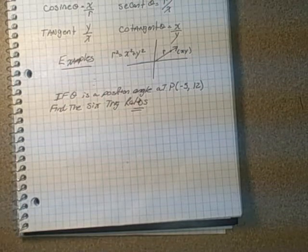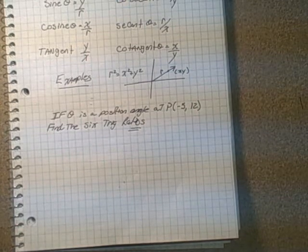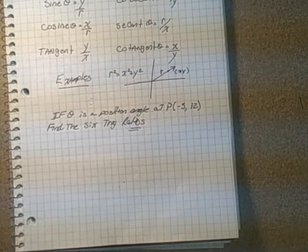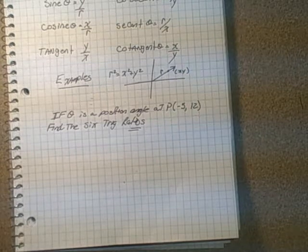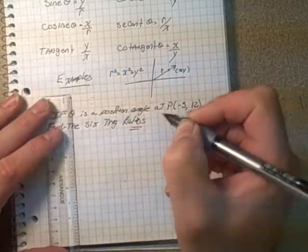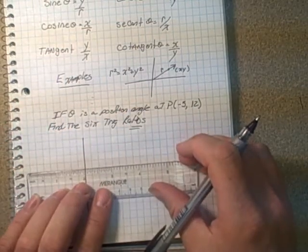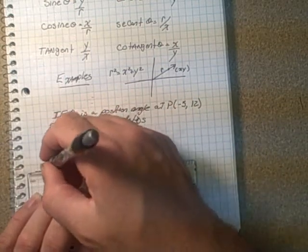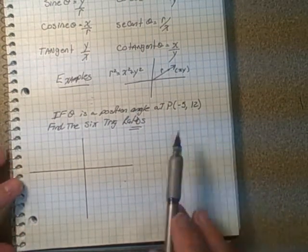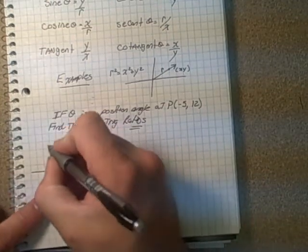Here I have the first one: if theta is a position angle at P equals (-5, 12), find the six trig ratios and the exact values of those. So what we should primarily do in this case is always draw our little positional vector here. Now I'm going to remind you that you have to be careful with negatives and positives quite a bit here, and you have to remember where x's and y's are negative. So here we have a point at (-5, 12).